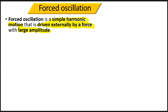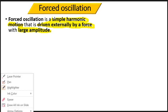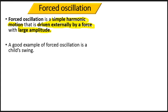These are the three basic keywords that must be noted when defining forced oscillation. A simple example of forced oscillation is a child's swing. When you place a child on a swing, the child remains stationary as long as no force is applied. Once force is supplied, the child begins to move in the direction of the force applied on the swing. So a child's swing is a good example of forced oscillation.